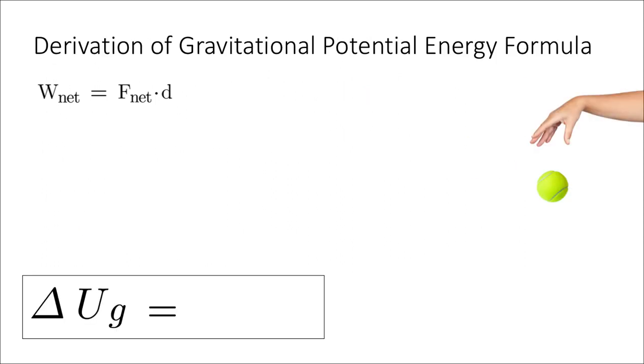We can also use our knowledge of work now to go back and derive that formula for gravitational potential energy that we've used previously. So if you look at, for example, someone dropping a tennis ball, like I've shown on the right-hand side of the slide here, we can think about the total work done on this ball as the net force multiplied by the displacement. Again, assuming that the force is in the same direction as displacement, I've just dropped that cosine theta term here. So cosine theta is essentially just 1 here.